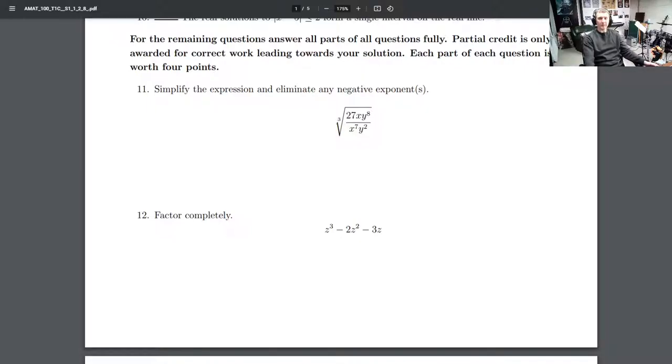The instructions for the remaining questions: answer every part of all questions fully. Partial credit is only awarded for correct work leading towards your solution. Each part of each question is worth 4 points.